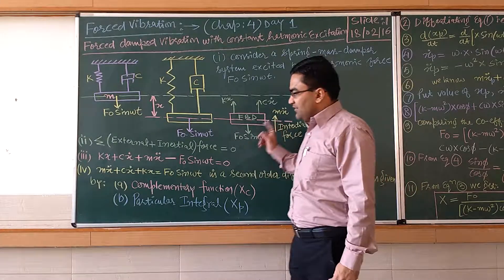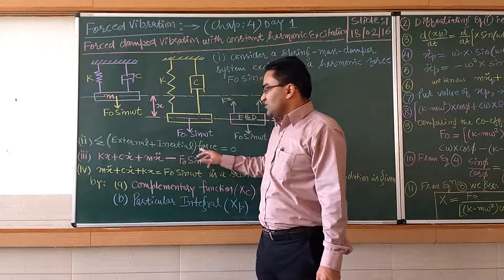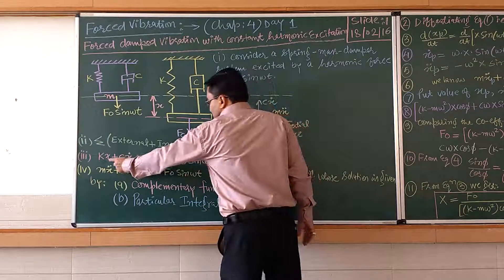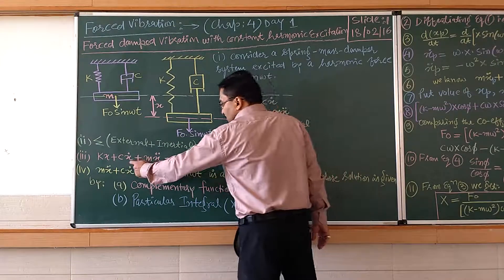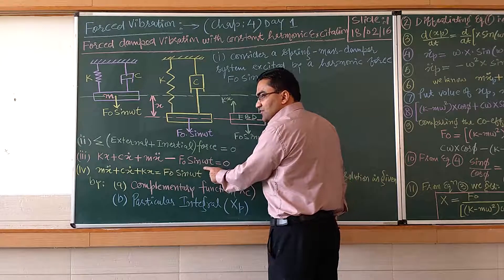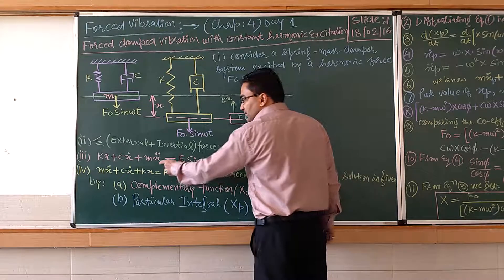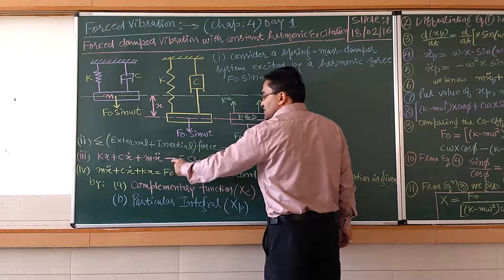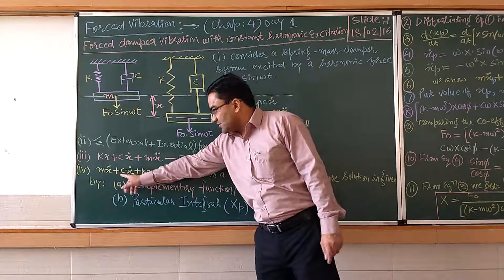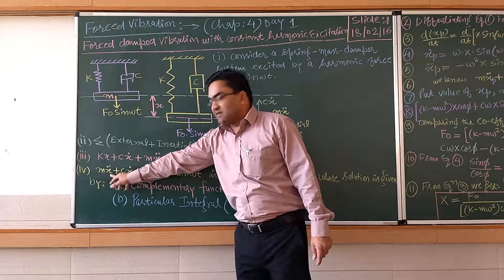Analyzing the FBD by applying D'Alembert's principle — the summation of external and inertial forces must be equal to zero for equilibrium. kx is in the upward direction, cx-dot is in the upward direction, mx-double-dot is the inertial force in the upward direction, but F₀ sin(ωt) is in the downward direction as the excitation force. So the equation becomes: mx-double-dot + cx-dot + kx = F₀ sin(ωt). This is the second-order differential equation for forced damped vibration.